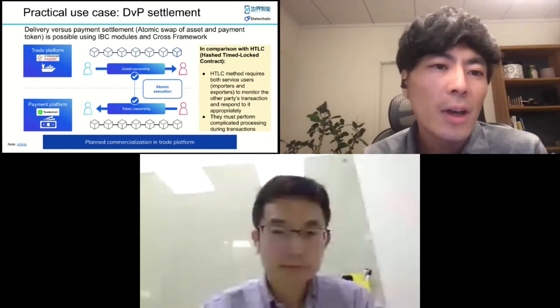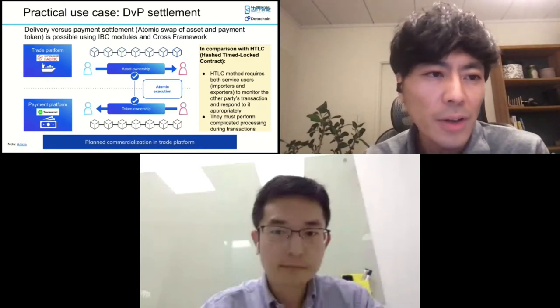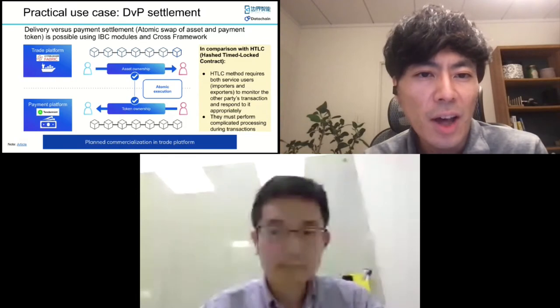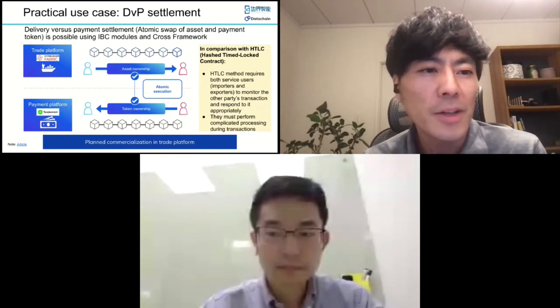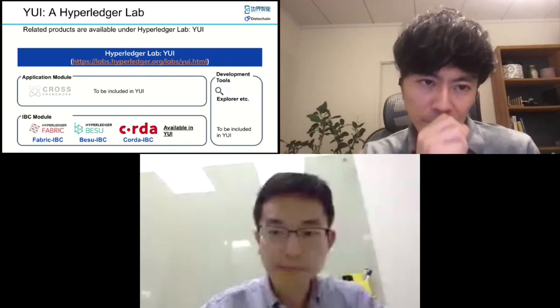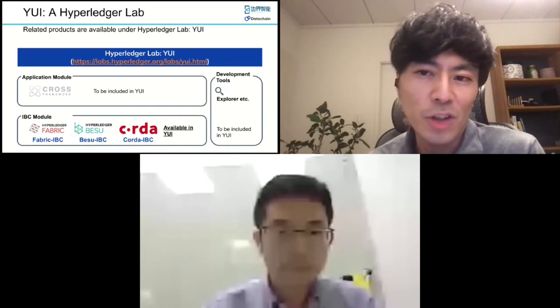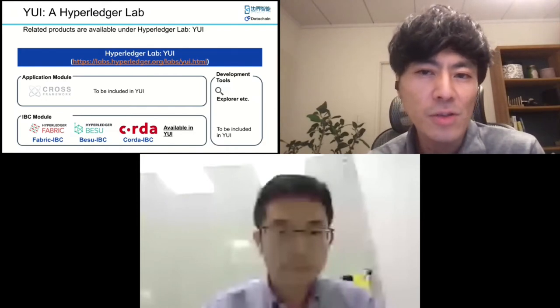In my final section, I'd like to talk about our current work on Hyperledger. We have released a Hyperledger lab called YUI as an interoperability solution for the Hyperledger family. It includes related products such as Fabric IBC, Base IBC, and Corda IBC. We are expanding this lab to add a framework for cross-chain applications like cross-framework, as well as tools like Explorer for cross-chain transactions. They were initially developed and are mainly maintained by DataChain, but Benji AI is also supporting and contributing to the YUI lab. Please refer to the lab page for more details.